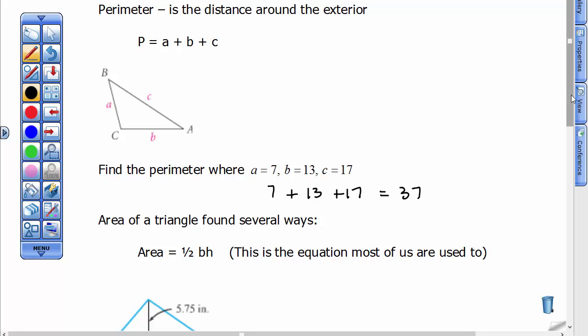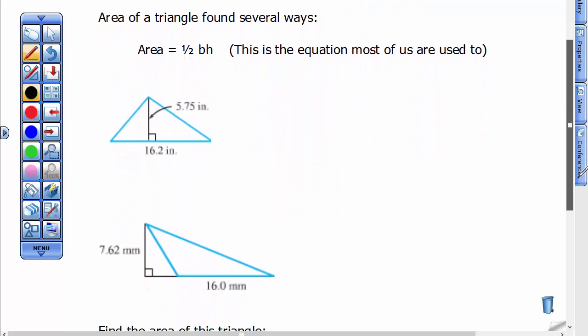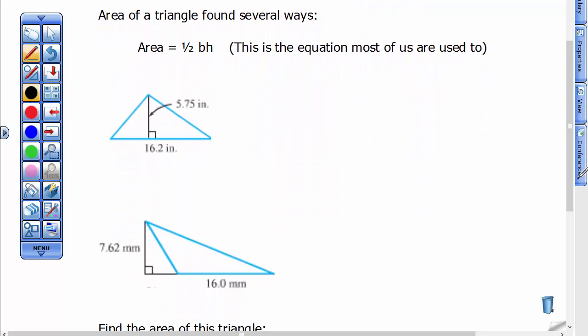Alright, the area of a triangle can be found in several ways. And what is a formula that you're very accustomed to? And that is, you can find the area, sometimes we write this, as one-half the base times the height. These pictures are not drawn real well in that they're not dimensioned, so I'm going to show you that this 16.2 is supposed to represent the base of this right triangle, and these are my dimension lines.